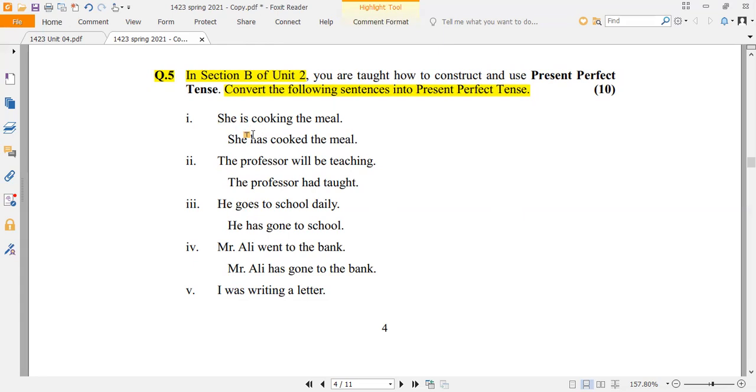Okay, here you have the first sentence which you want to change to present perfect: 'She is cooking the meal.' So she is cooking the meal is present continuous. We have to change it to present perfect. She is the subject. Cooking, which we put in continuous with ing, we put in the first form, but we put it in the present perfect with the third form. So she has cooked the meal. The professor will be teaching.